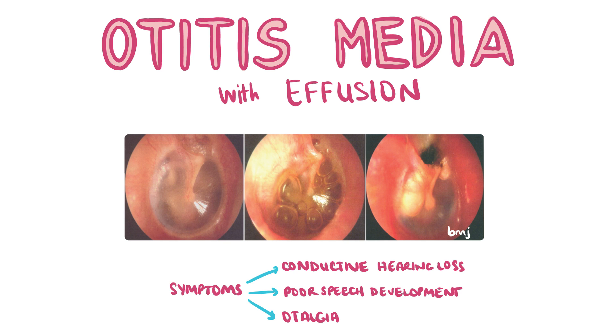Hearing aids may also be considered. Unilateral glue ear in an adult is worrying and should warrant further investigations, as it could be a sign of nasopharyngeal malignancy.